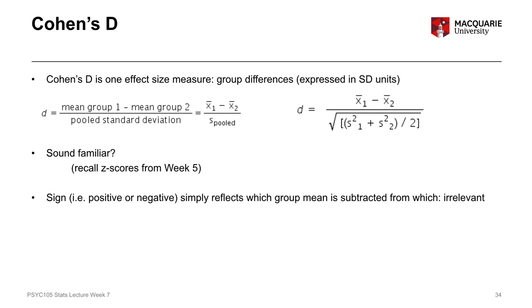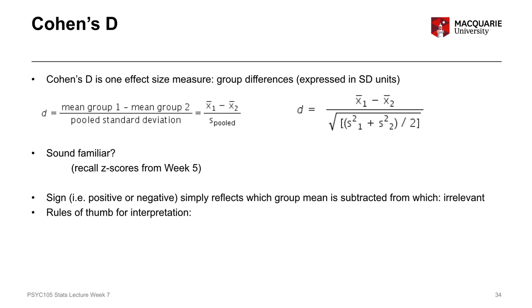The sign of Cohen's D is completely unimportant — it only represents the direction of which group is subtracted from the other, just like the t-test. When we report Cohen's D we tend to report it in absolute values, removing any negative sign. Cohen's D can range from zero up to infinity with no upper bound, and the bigger the value, the bigger the effect.